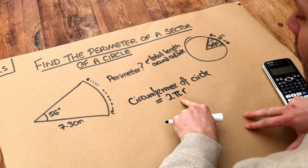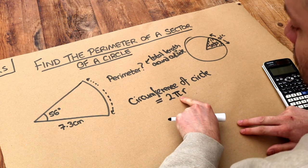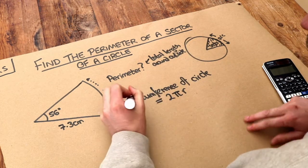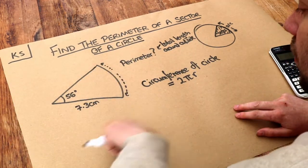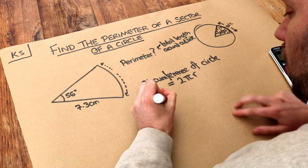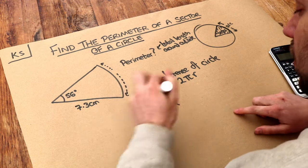So r is the radius and pi is a special number. It has the value 3.141592 etc. going on forever. So if we were to find the full circumference of a circle, that would be 2 times pi times the radius of 7.3.